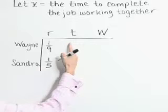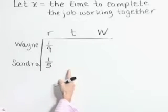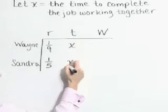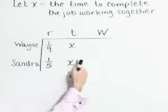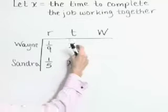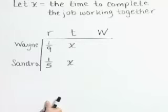We've defined our variable as the time it takes them to complete the job working together. So let's substitute that variable X in both these spots. They're going to work together, starting at the same time, ending at the same time. So both of their time amounts is this value X.